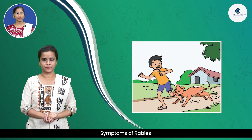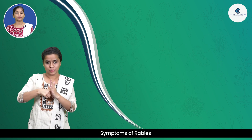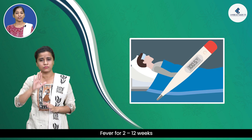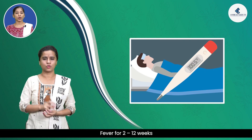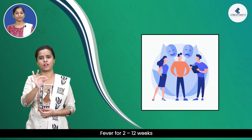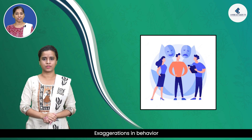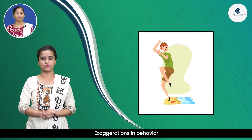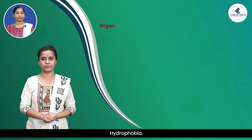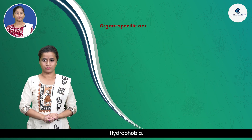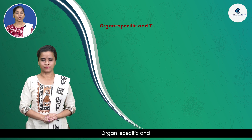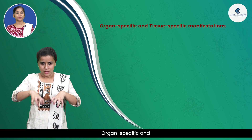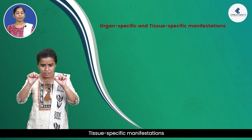Symptoms start to appear within 90 to 175 days of the dog bite. Symptoms of rabies include fever for 2 to 12 weeks, exaggerations in behaviour, hydrophobia, and organ-specific and tissue-specific manifestations.